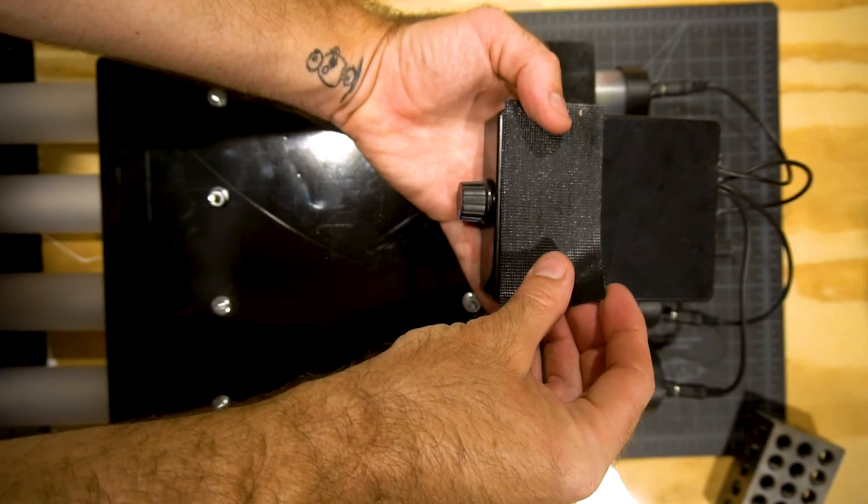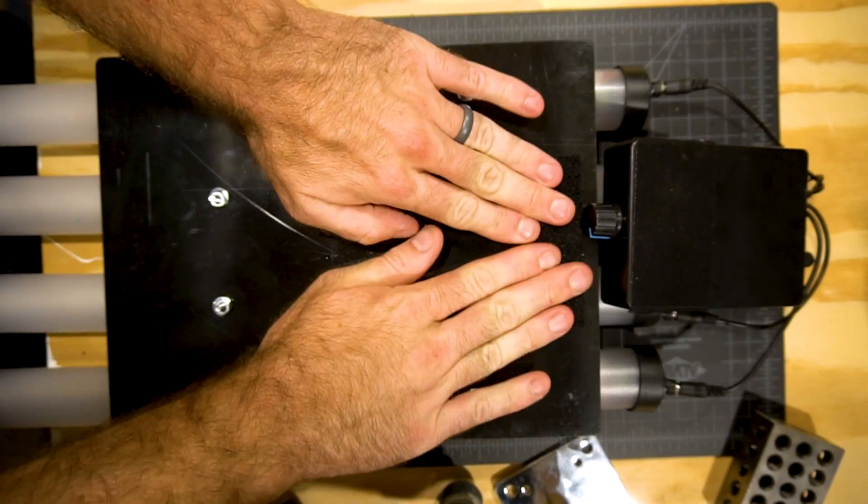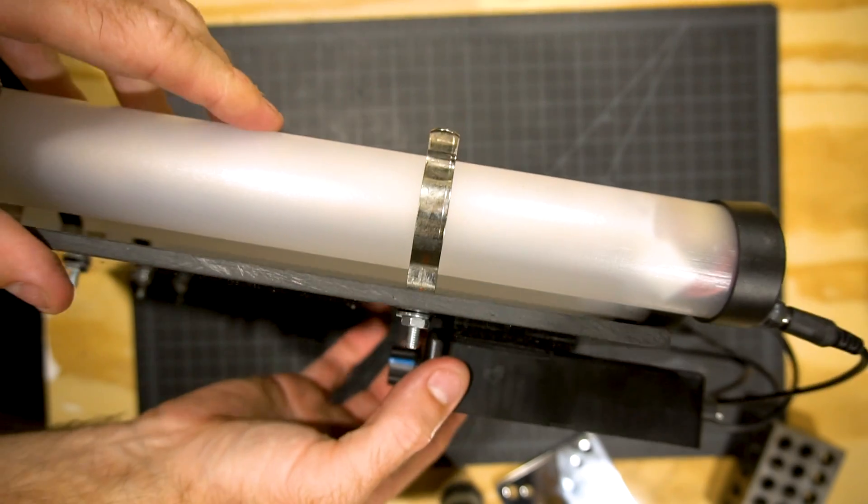Now flip the unit over, and grab the velcro with adhesive backing. We want to connect our dimmer to one of the sides. Only part of the box will have velcro on it, but it will hold just fine.